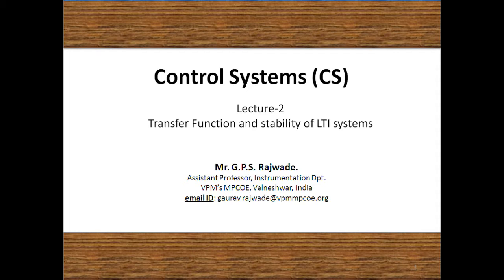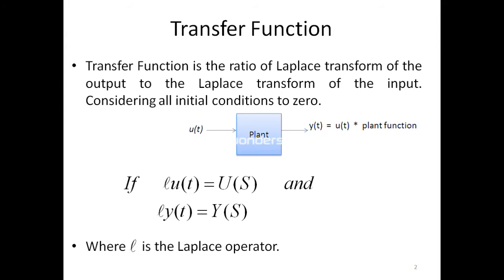Hello friends, welcome back to the video lecture series on control systems. Today we will start with transfer function. Looking at the block diagram, the plant function has one input u(t) and one output y(t). Here y(t) is nothing but the input convolved with the plant function. Convolution is one operation — just like addition, subtraction, multiplication, and division are operations in number systems, convolution is an additional operation in signal systems.